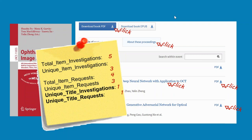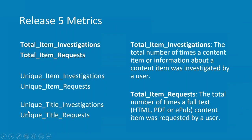The really useful thing in Release 5 is that the unique title investigations and unique title requests are both one. That's because all this activity — all these different clicks the user made — all relate to this one single book, this one unique title.